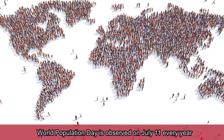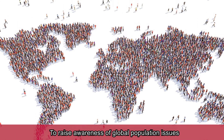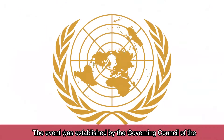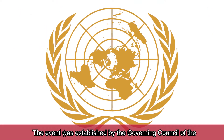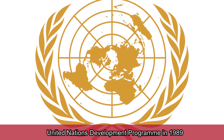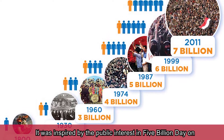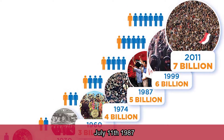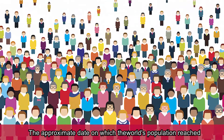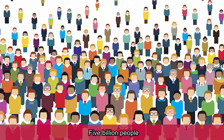World Population Day is observed on July 11th every year to raise awareness of global population issues. The event was established by the governing council of the United Nations Development Programme in 1989. It was inspired by the public interest in 5 Billion Day on 11th July 1987, the approximate date on which the world's population reached 5 billion people.